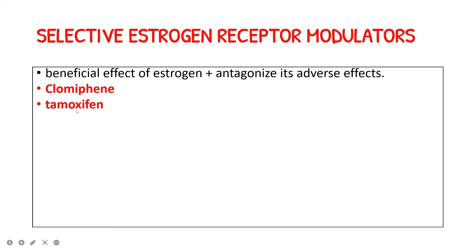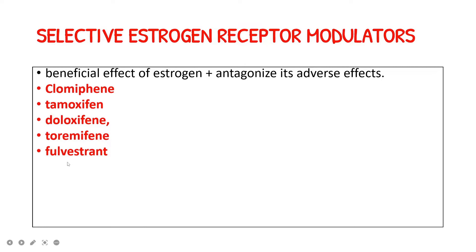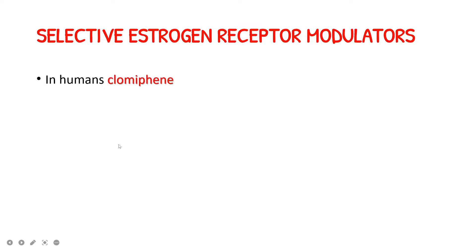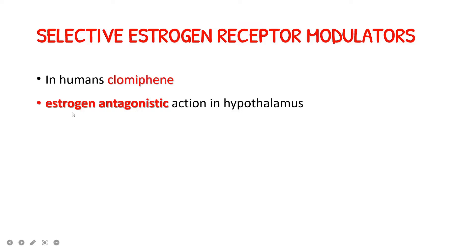Under Selective Estrogen Receptor Modulators, the examples are: clomiphene citrate, tamoxifen, deloxifen, tormifen, fulvestrant, raloxifen, bezidoxifen, ospimifene, and ormeloxifen.